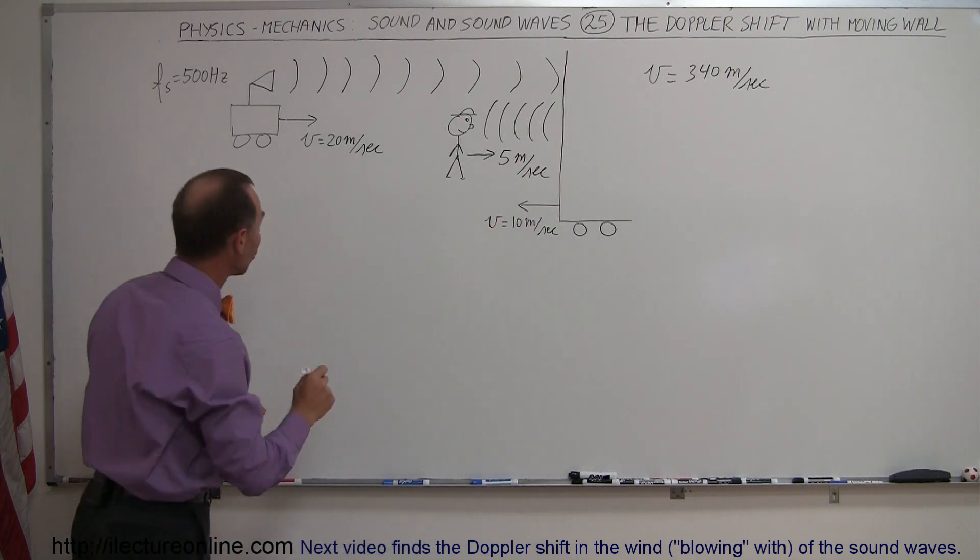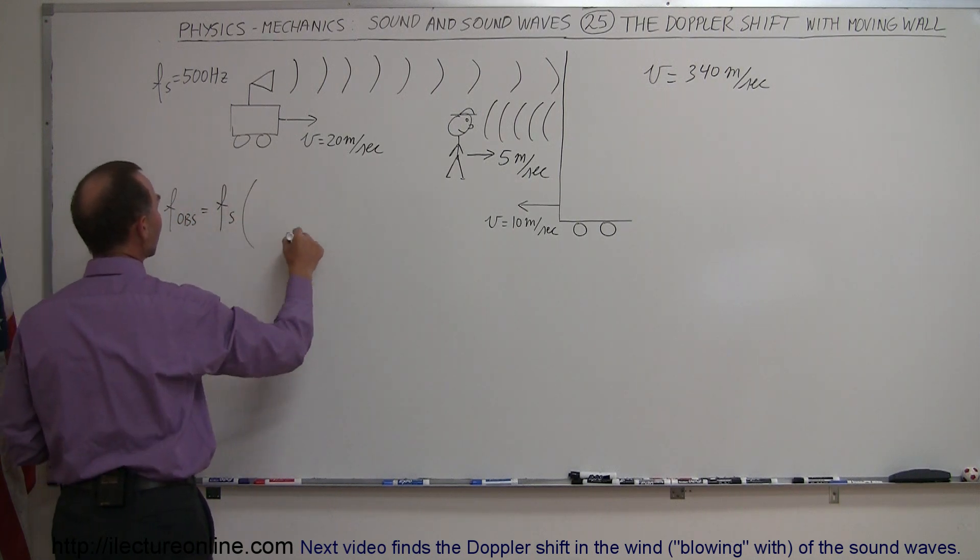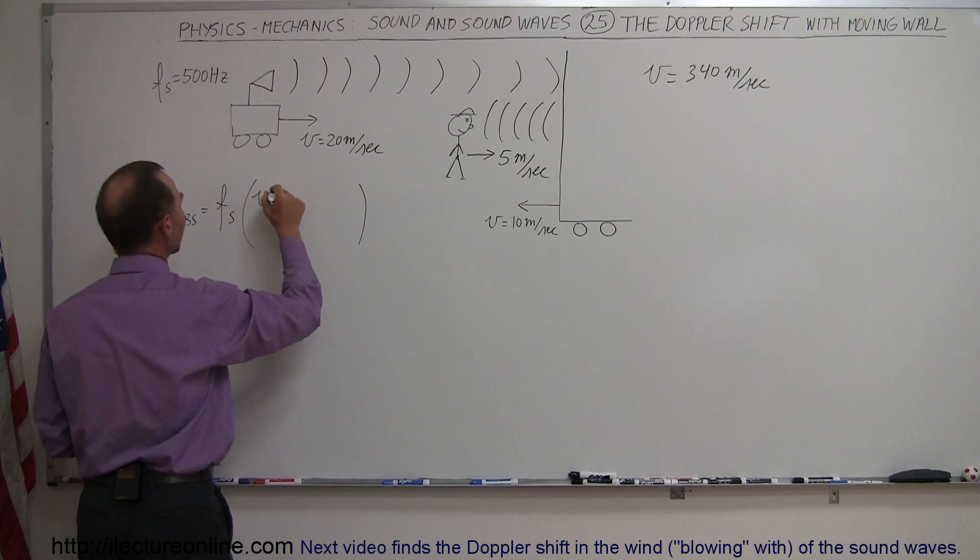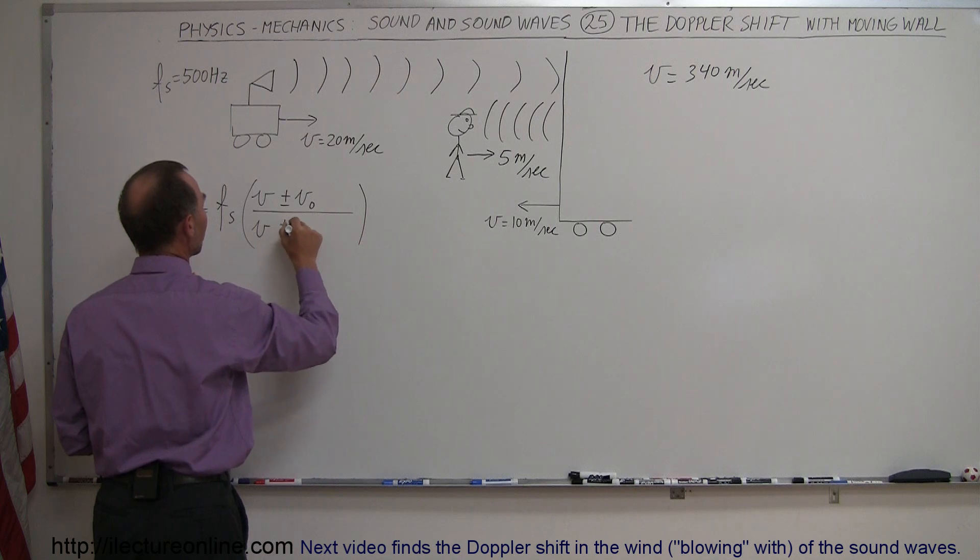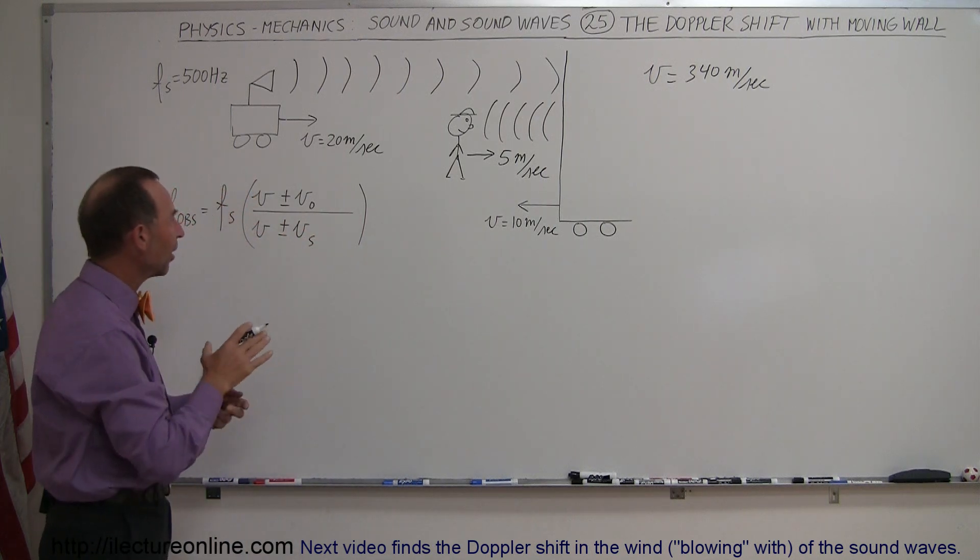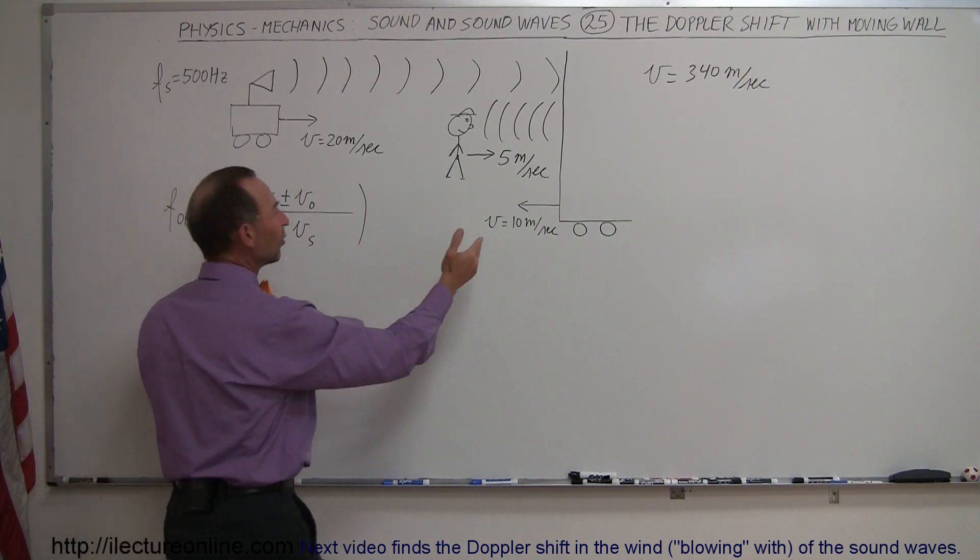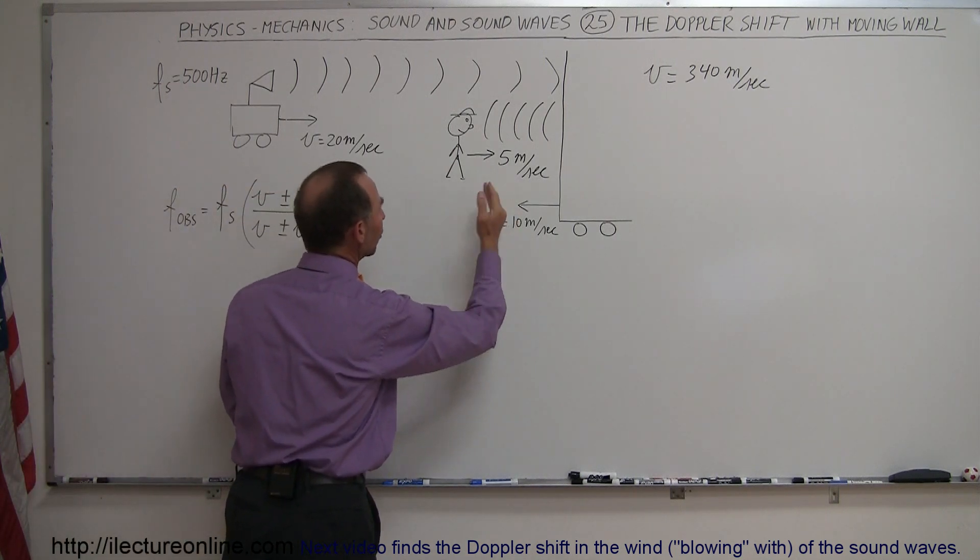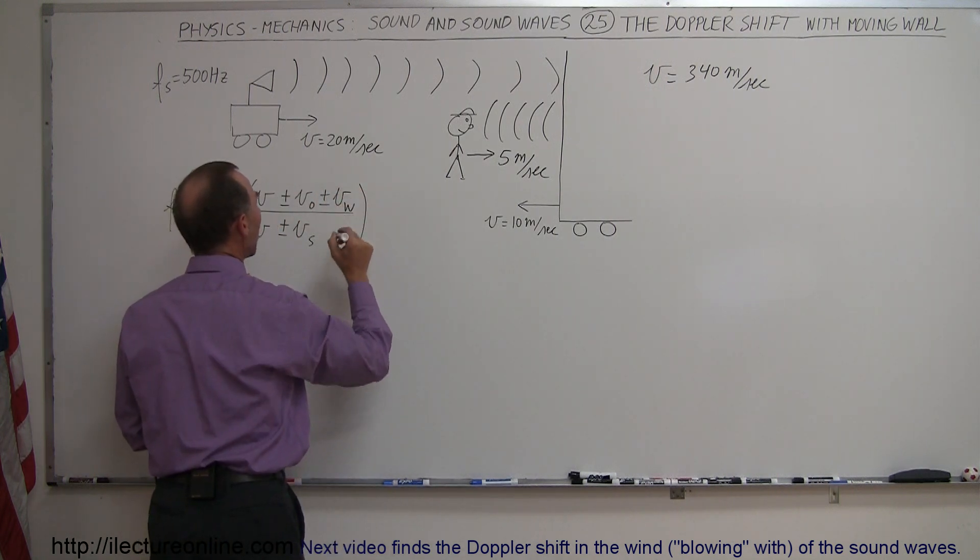So the equation that normally is like this, frequency observed is equal to frequency of the source times the equation where we have velocity of sound, velocity of sound here plus or minus the velocity of the observer plus or minus the velocity of the source. To that we have to add the velocity of the wall, and it's like it is as if there is an observer that's moving faster towards the sound, so this is going to be plus or minus the velocity of the wall.